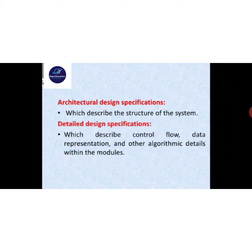Architectural design specification means internal design. It describes the structure of the system — that means building the internal structure of the system.